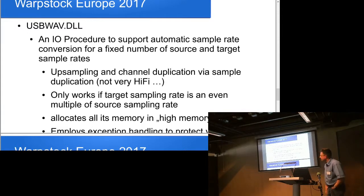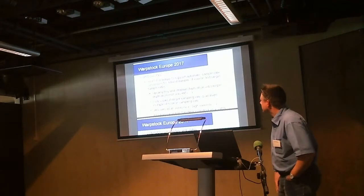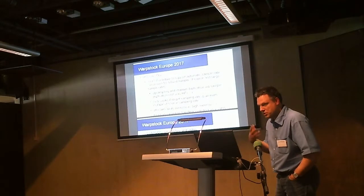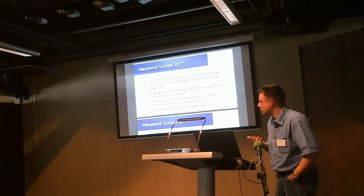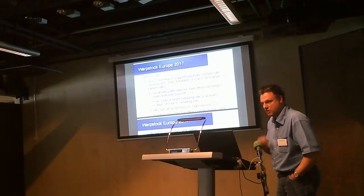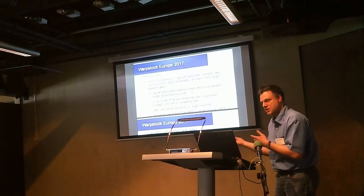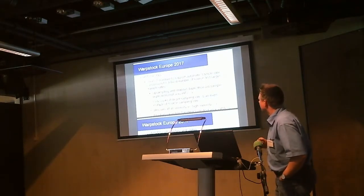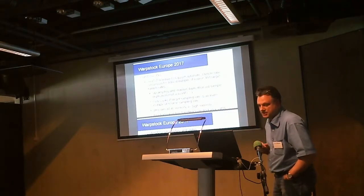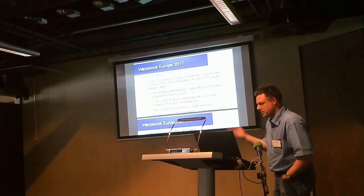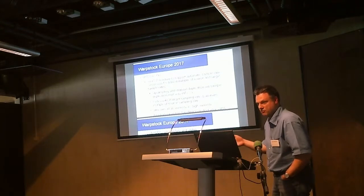I decided to implement an I/O procedure. Normally an I/O procedure is for reading data from a file for playback and handing it to the rest of the system. So I decided to build a sample rate conversion — an I/O procedure that handles WAV files but offers on-the-fly sample rate conversion, meaning you click on a file and it just plays, automatically converted to the target sample rate the device can play. Currently the limitation is that source and target sample rates must be even multiples of each other — so 11,025 and 44,100 is okay, but 8,000 and 44,100 is not.